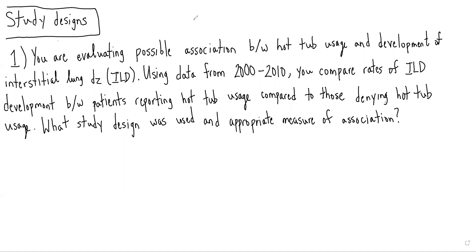In this case, we are evaluating a possible association between hot tub usage and development of interstitial lung disease. Using data from 2000 to 2010, we compare rates of ILD development between patients reporting hot tub usage compared to those denying hot tub usage. What study design was used, and what is the appropriate measure of association?